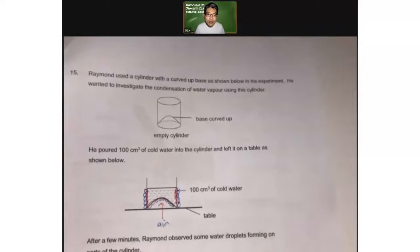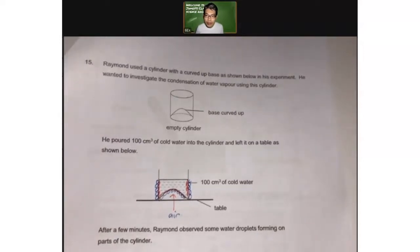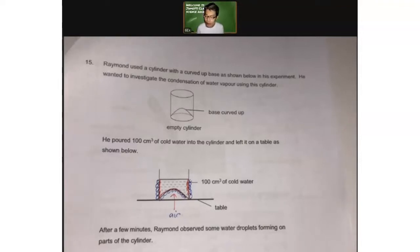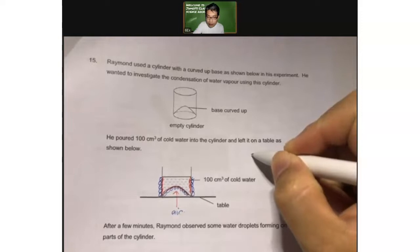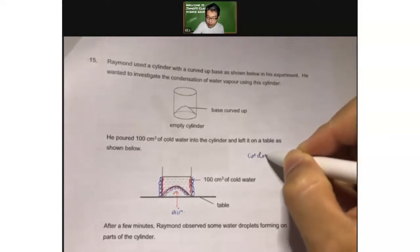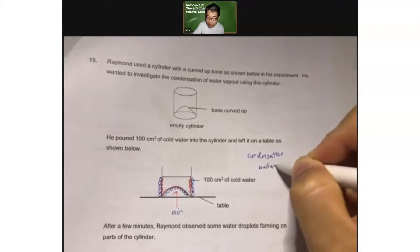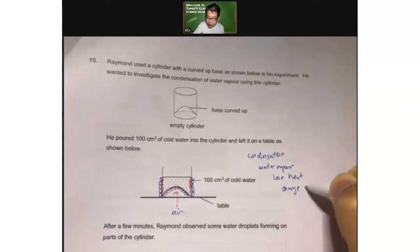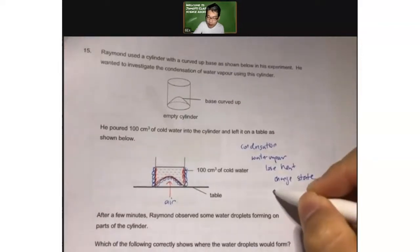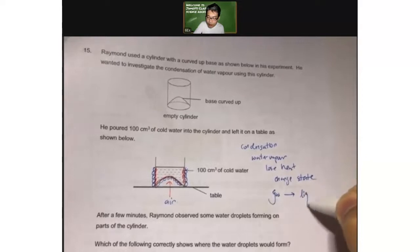Let's turn to question 15. Now Raymond used a cylinder with a curved up base as shown below in his experiment. He wanted to investigate the condensation of water vapor using this cylinder. Now he poured 100 cubic centimeters of cold water into the cylinder and left it on a table as shown below. Now I've really pre-colored this. What does this mean?